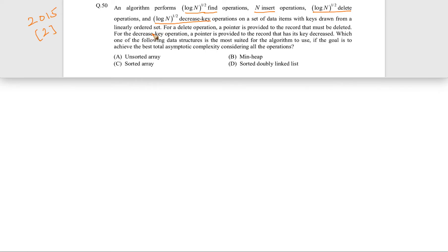A linearly ordered set is basically a set in which its elements can be linearly ordered — something like a list of integers where you can definitively order elements because you know which is smaller than or greater than any other number. For delete operations, a pointer is provided to the record that must be deleted. Similarly, for decrease-key operations, a pointer is provided to the record whose key is decreased. Which data structure is most suited to achieve the best total asymptotic complexity considering all the operations?